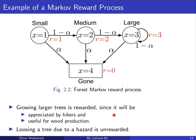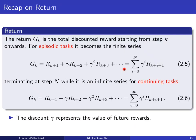Extending the forest tree example to an MRP, we add rewards to the different states: being in the small tree state gives reward +1, medium tree gives reward +2, large tree gives reward +3, and transitioning to the termination state x4 gives no reward.